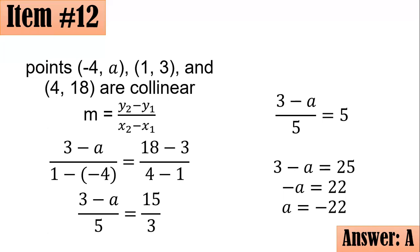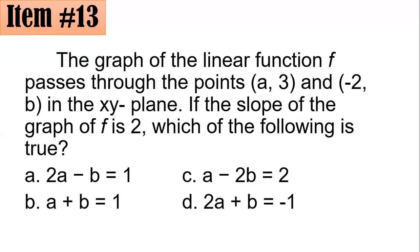Number 13: The graph of the linear function F passes through the points (A, 3) and (negative 2, B) in the xy plane. If the slope of the graph of F is 2, which of the following is true? Did you go for 2A minus B equals 1, A plus B equals 1, A minus 2B equals 2, or 2A plus B equals negative 1?